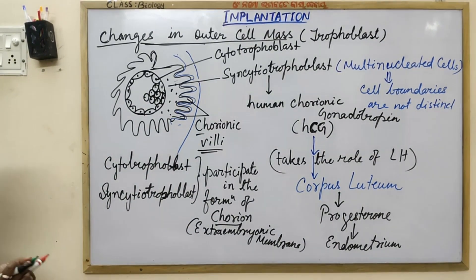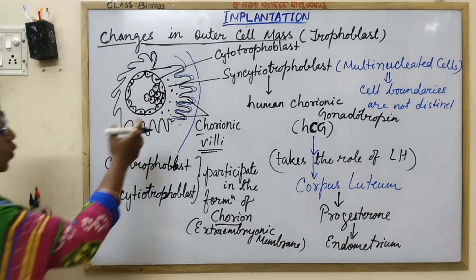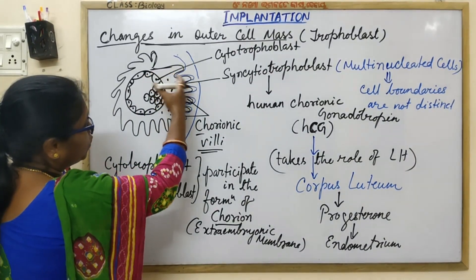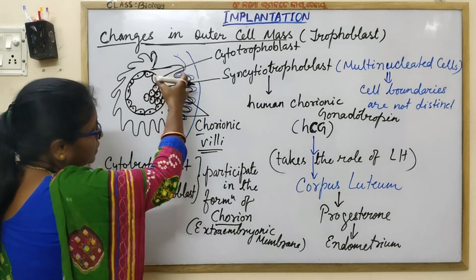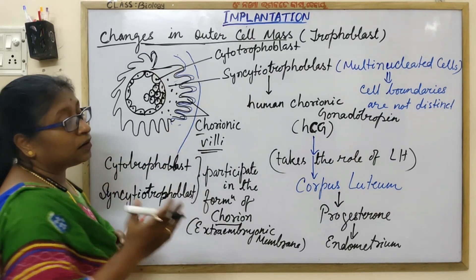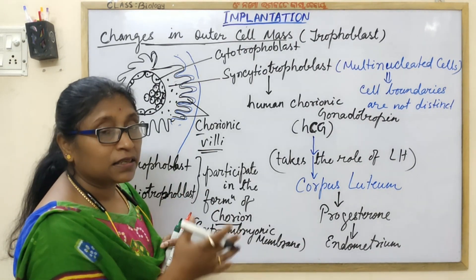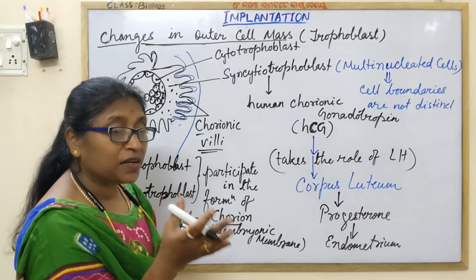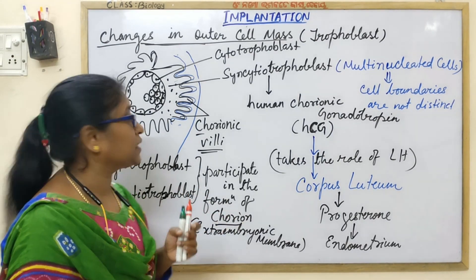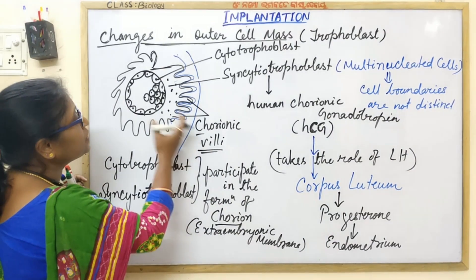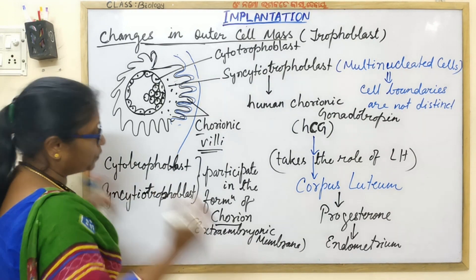The chorionic villi form the chorion. The chorion and the decidua basalis — the stratum functionalis portion lying between the stratum basalis and the embryo — together form the placenta. We will study this in detail afterward.